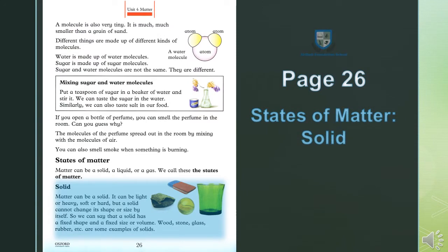Page 26: Solid. Hindi: thos. Matter can be solid — maada thos hota hai. It can be light or heavy — yeh halka bhi ho sakta hai or bhaari bhi; soft or hard — naram bhi ho sakta hai or sakt bhi. But a solid cannot change its shape or size by itself — lekin ek solid ya thos khud se apni shakal ya jisamat nahi badal sakta. So we can say a solid has a fixed shape and a fixed size or volume. Wood, lakdi; stone, pathar; glass; rubber, etc. are some examples of solid.